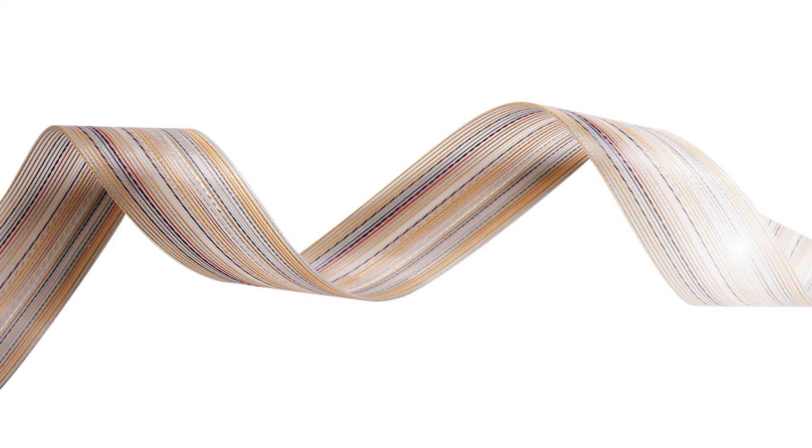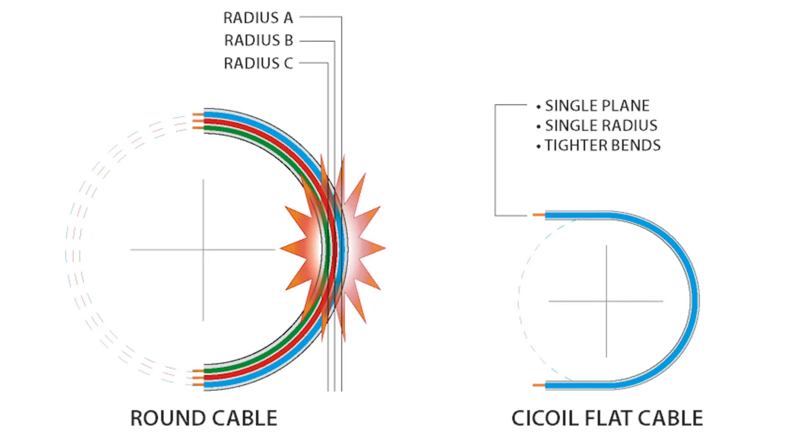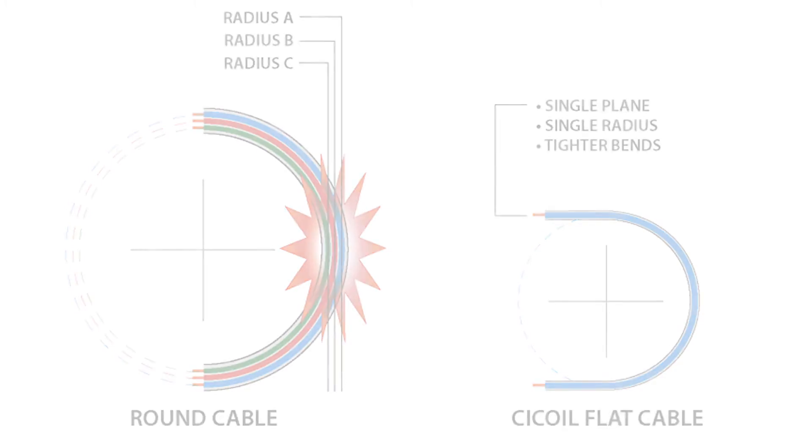Flat cables are significantly more flexible than round cables, because in flat cables, each conductor flexes the same amount and in the same plane, versus the excessive twisting and stresses on wires inside a round cable. And C-Coil flat cables have extremely small bend radiuses, which means the cables are able to fit into very tight, compact spaces.